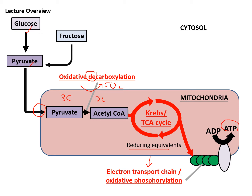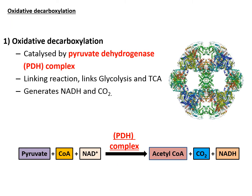NADH and FADH2 are high-energy electron carriers that can be used in the electron transport chain for the production of ATP. Note that oxidative decarboxylation is different from oxidative phosphorylation — in the first reaction you remove carbon dioxide, while in oxidative phosphorylation you get ATP production. Don't be confused by these two different reactions.